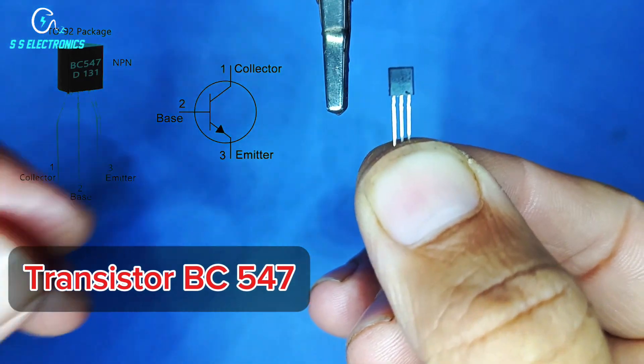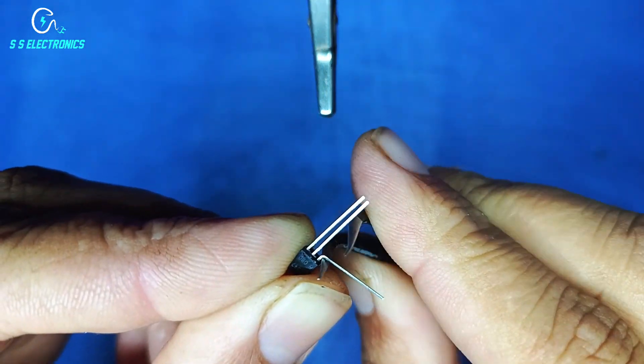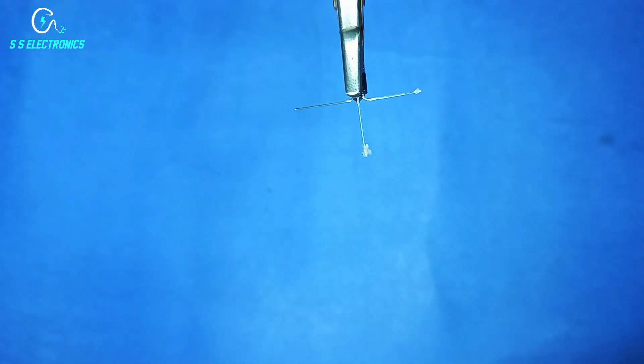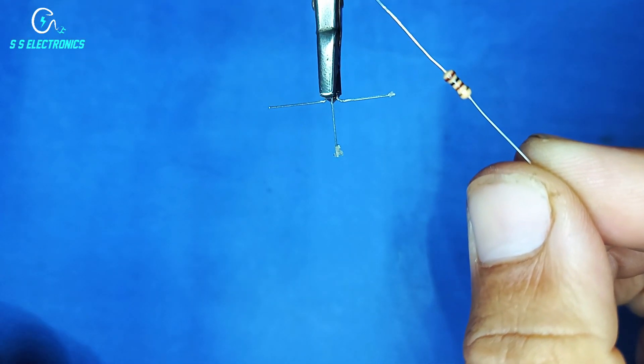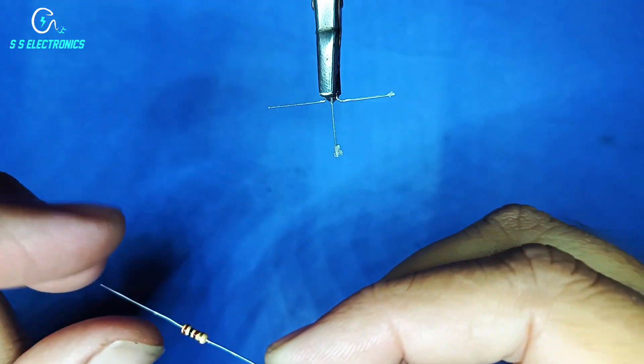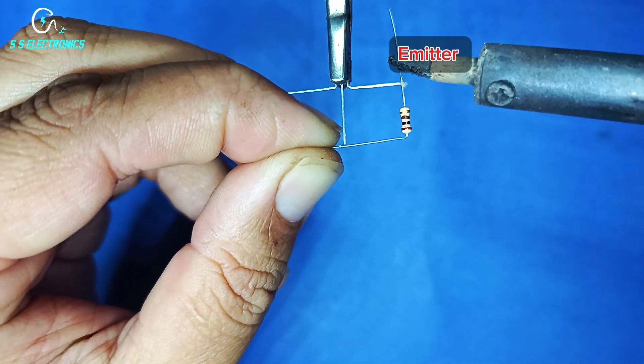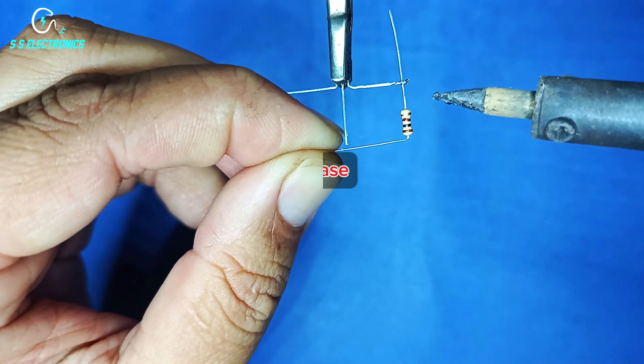Transistor BC547. 100 ohm resistor. Connecting resistor one side with transistor emitter pin and other side with transistor base.